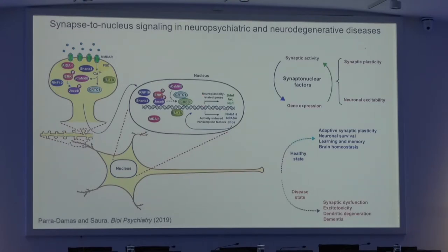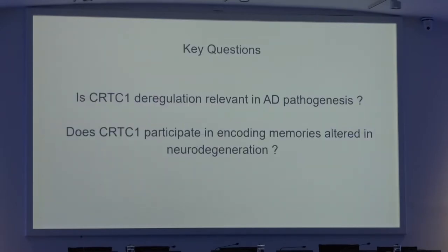The idea is that some of these factors can regulate gene expression governing synaptic plasticity, and these plastic changes can ultimately regulate memory processing. Two key questions in the lab were: whether CRTC1 deregulation is really relevant for Alzheimer's disease pathogenesis, and whether this factor — almost unknown in terms of neuronal function — participates in encoding the types of memory altered in neurodegeneration.